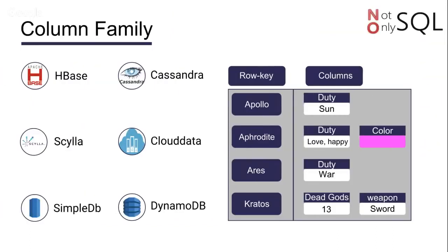The next one is the column family. The structure looks like a key-value, however it stores data in a very different way. Each piece of information is going to be stored in the column. For example, Aphrodite has a column with the values 'lovey' and 'happy', and a color column that has the value 'pink'. We have several implementations — I believe the most popular one is Apache Cassandra, but you also have HBase.